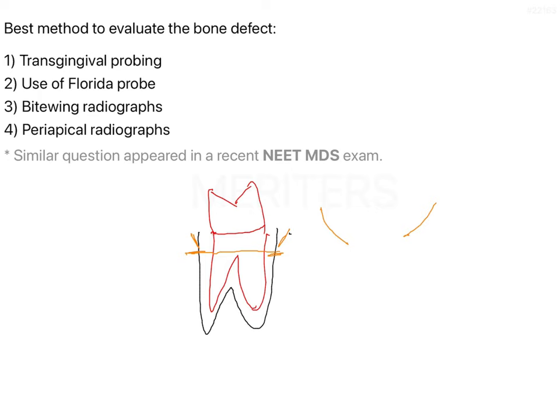That is why the best method to identify whether there is bone loss, and to identify the type of bone defect — whether it is horizontal or vertical, and if vertical, which type — is simply by raising a flap and looking into it directly. You raise a flap, directly probe the area of the defect, and identify the morphology and pattern of bone loss: whether it is vertical, horizontal, an osseous crater, a 3-wall, 2-wall, or 1-wall defect.